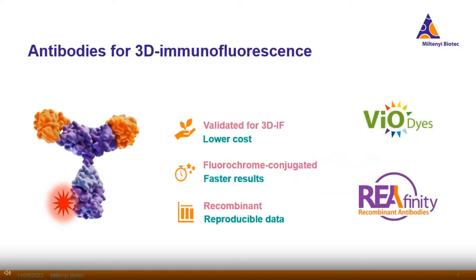Our antibodies, especially for 3D immunofluorescence, are low cost. They are all fluorochrome conjugated, which gives you faster results—easier than working with primary and secondary antibodies—and they are recombinant, giving you reproducible data.